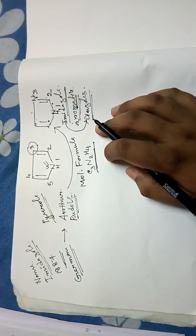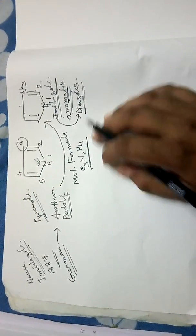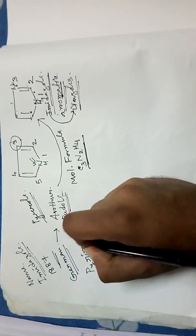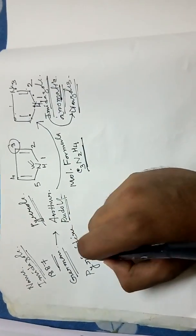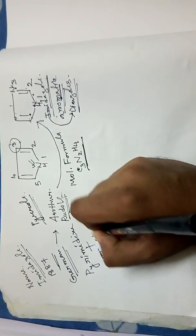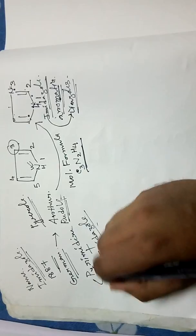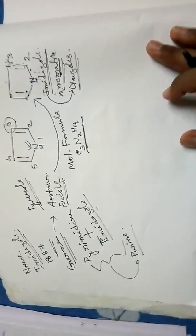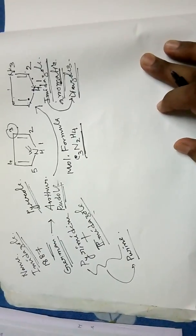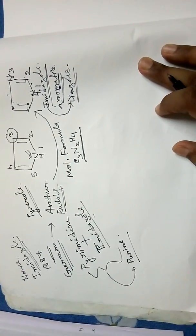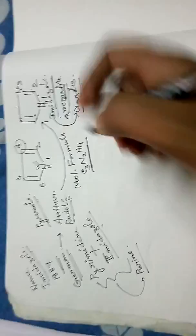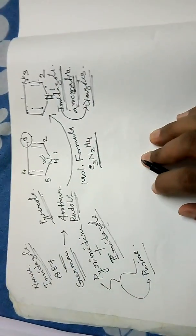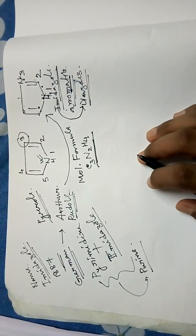When imidazole is fused to a pyrimidine ring, it forms the purine structure — a fused ring system of pyrimidine and imidazole. Many drugs contain the imidazole ring, such as nitroimidazole, which is an antifungal agent.